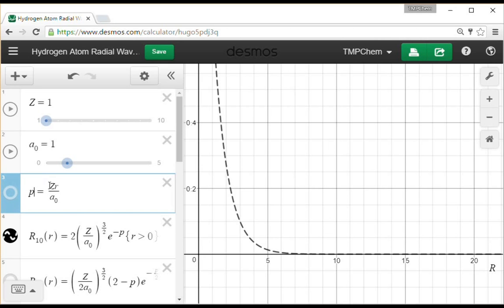Z is the charge of our nucleus. For a hydrogen atom, that is the number of protons, which is 1. The Bohr radius is equal to 0.529 angstroms. On this graph, I just have it set equal to 1, so this is being plotted in units of Bohr radius.